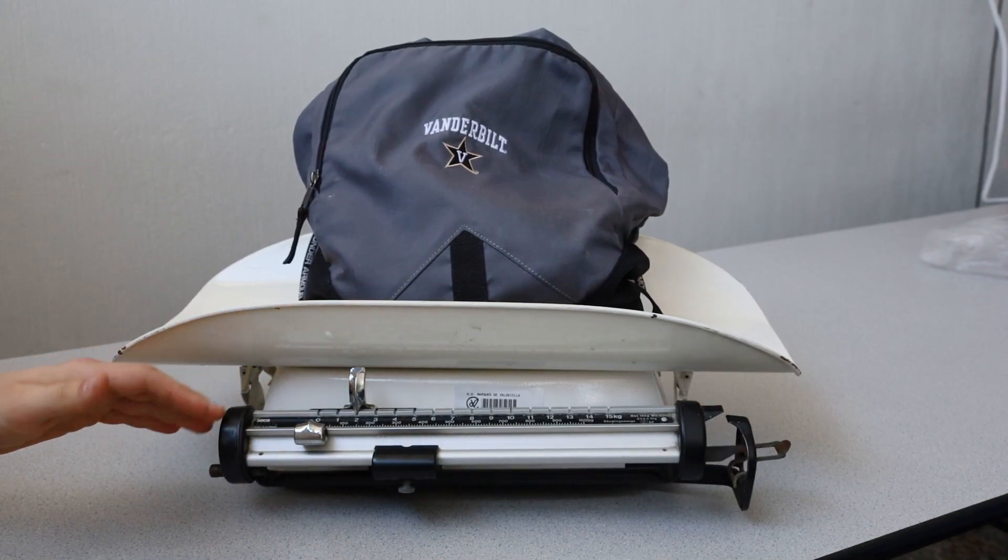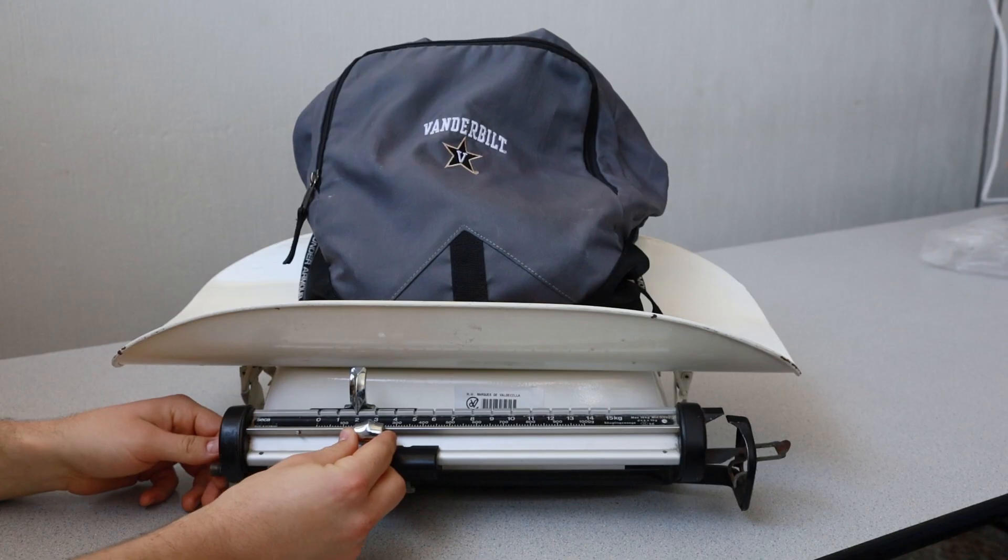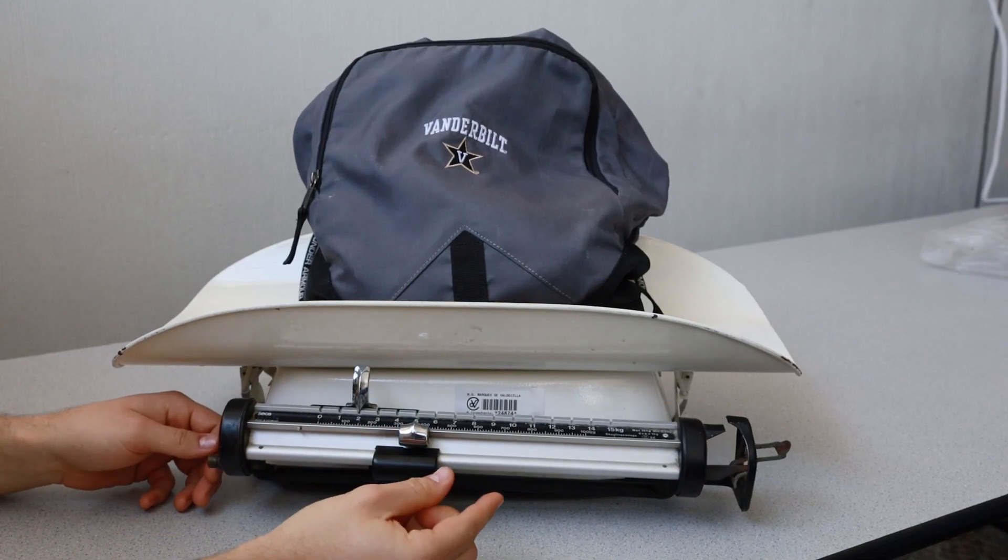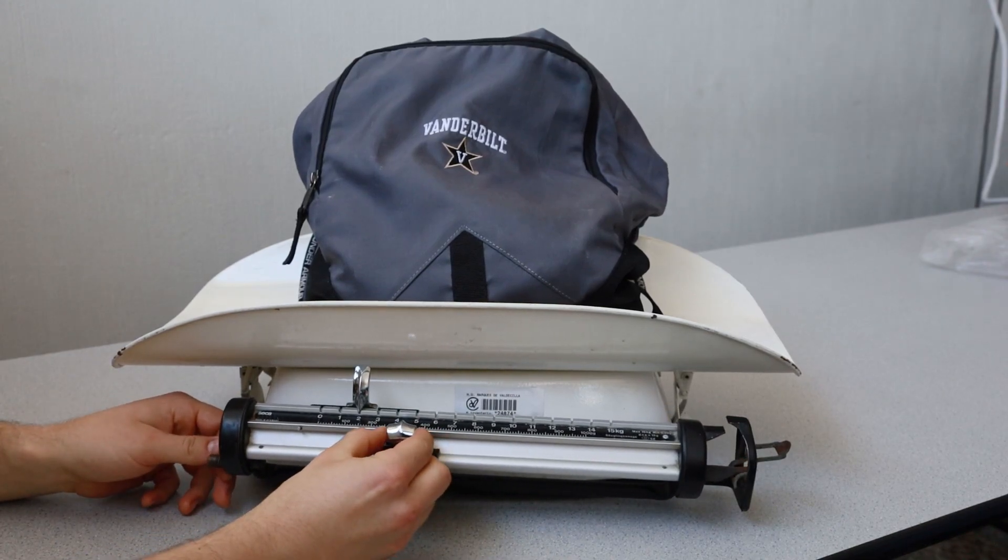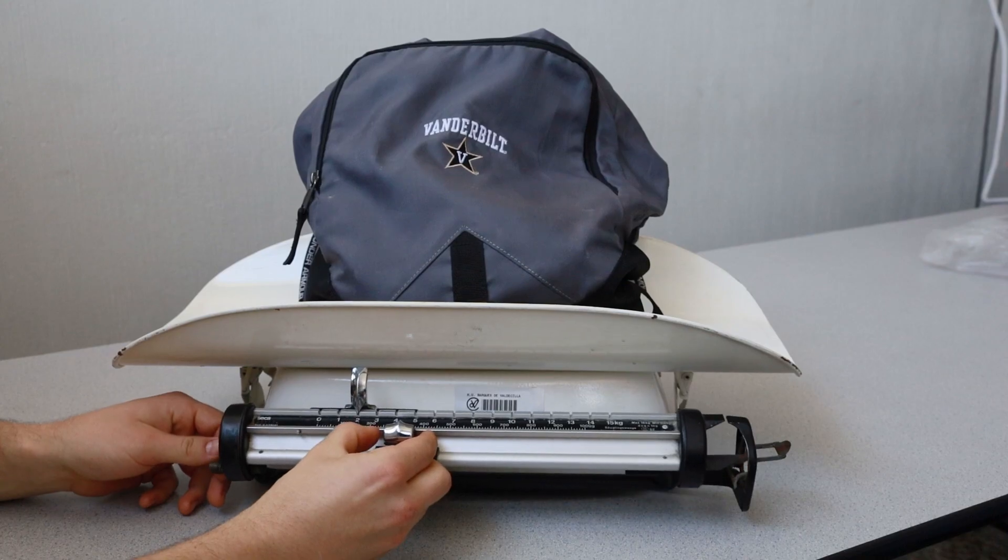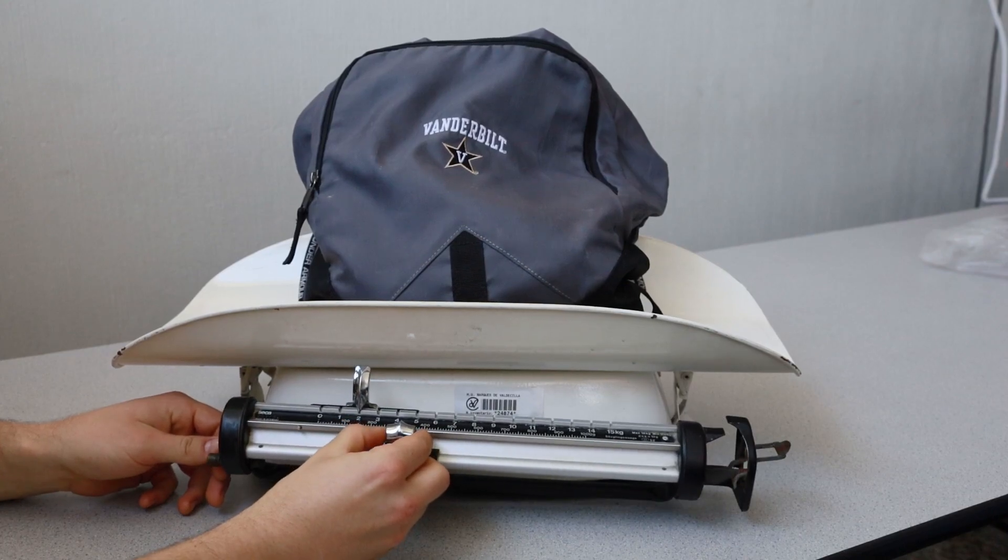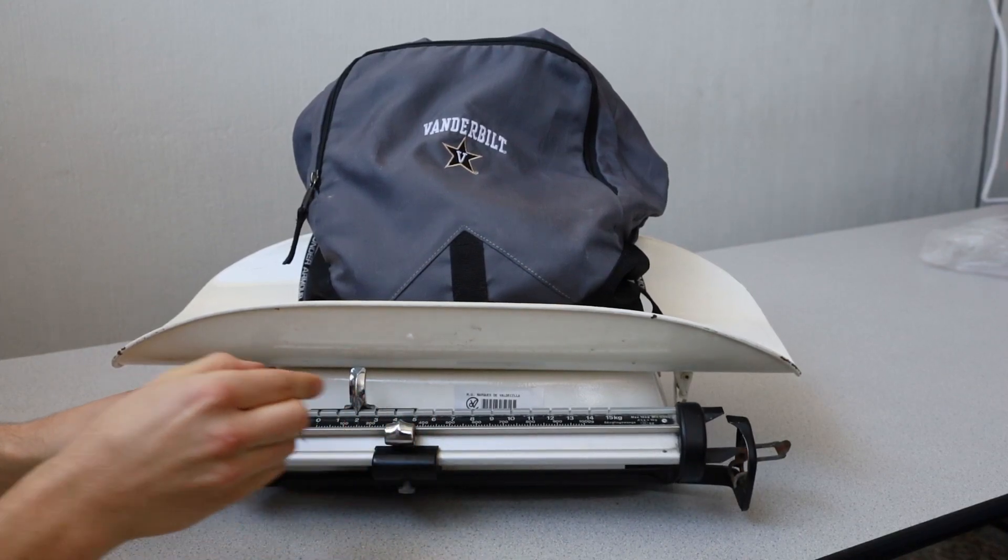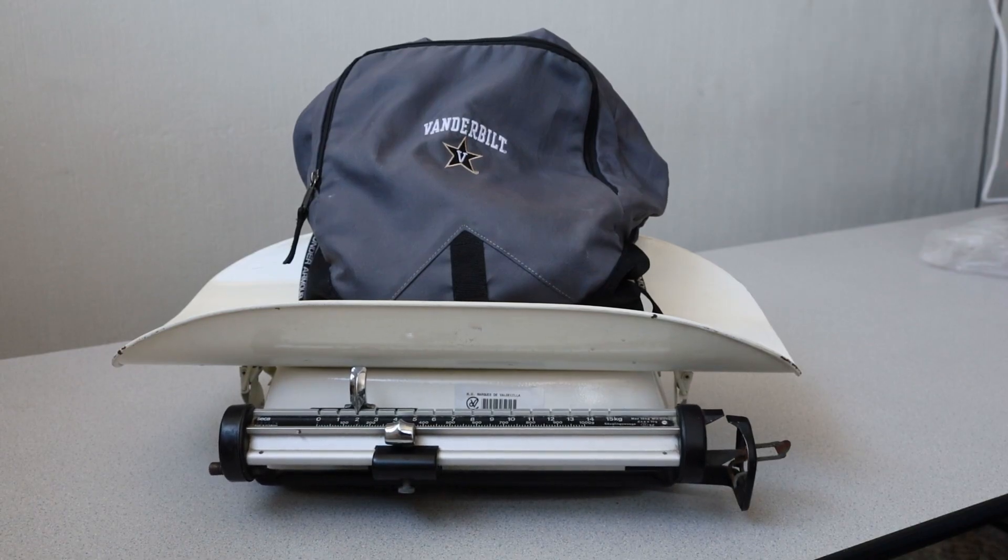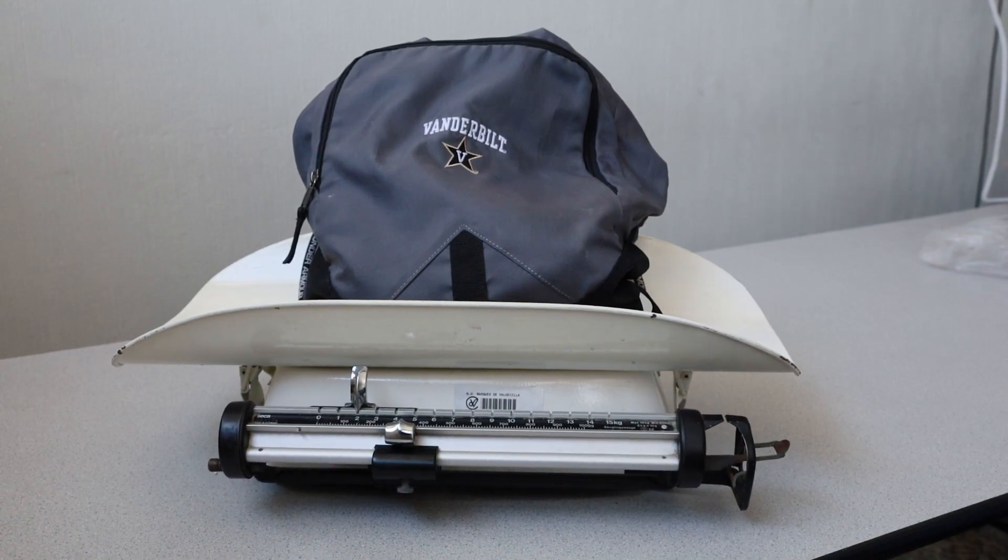Next, slowly move the small sliding weight to higher slots. Notice how the beam balance begins to slowly level out. Continue moving the small sliding weight until the beam balance is fully level and stays level. The weight of the unknown object can now be determined as the sum of the numbers that both the large and the small weight have been placed at.